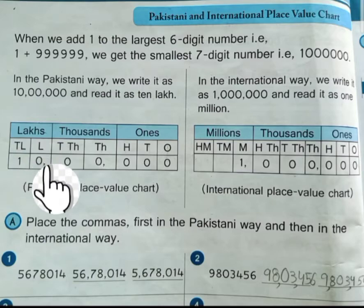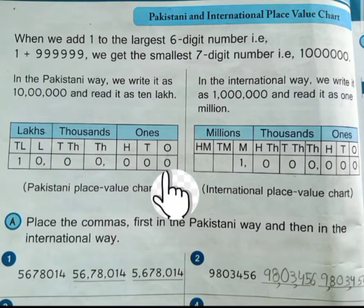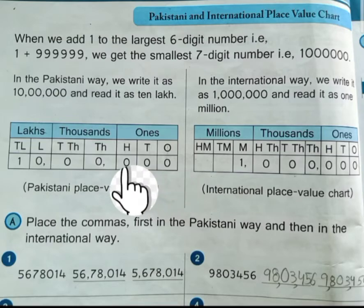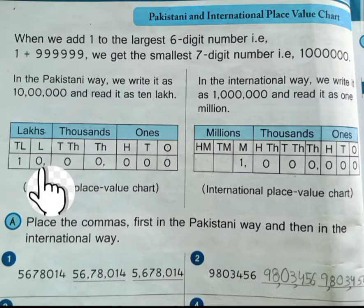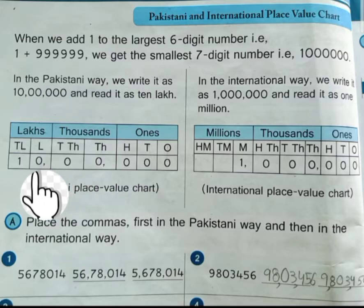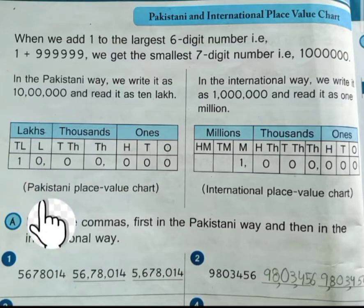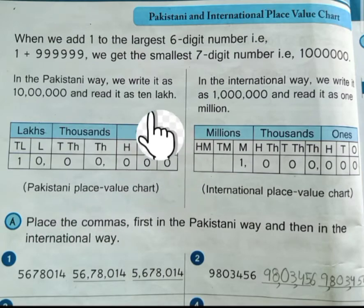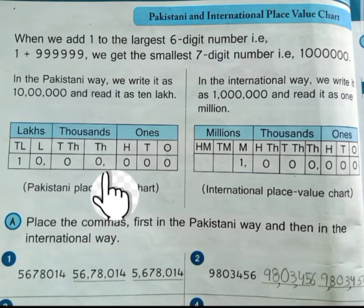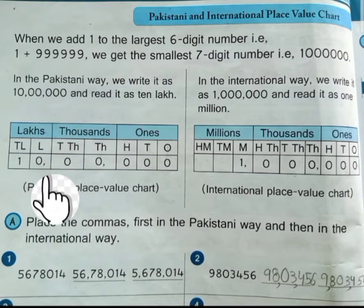These periods are also divided into different place values. The 1s period is divided into 1s, 10s, and 100s. The 1000s period is divided into 1000 and 10000. After that, we have the lakhs period, which is divided into lakh and 10 lakh. In the Pakistani way, we put the first comma after the 1s period and the second comma after the 1000s period.